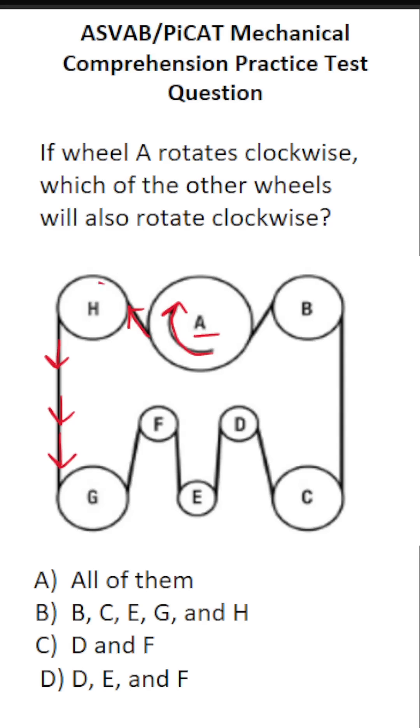So again, this belt is going to be moving wheel H this way. That's counterclockwise. Since wheel H is moving in the opposite direction of wheel A, we know all of them don't turn clockwise. Likewise, we know B is incorrect because it includes H.